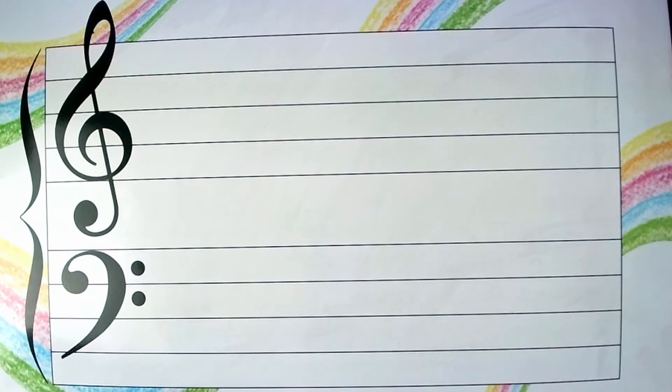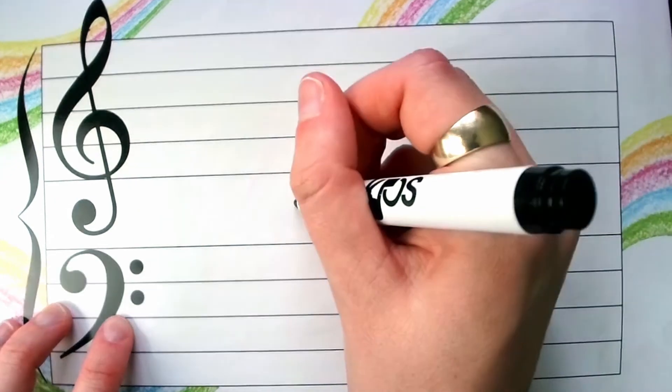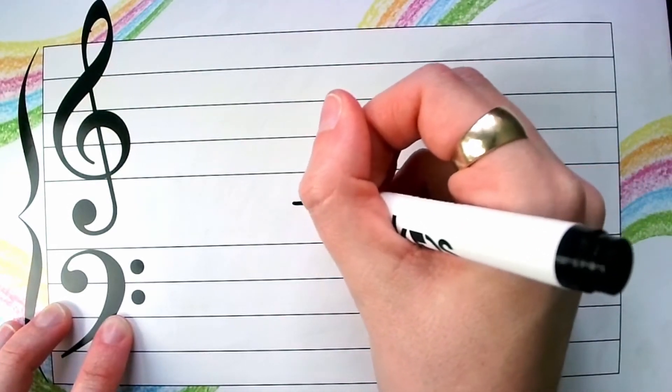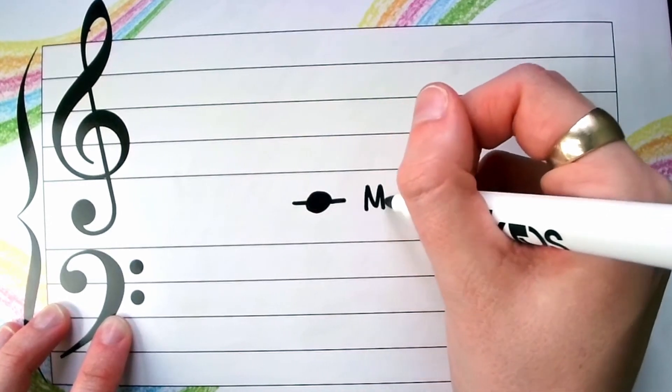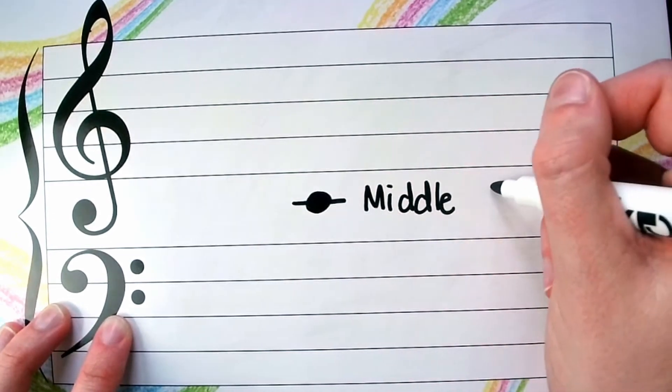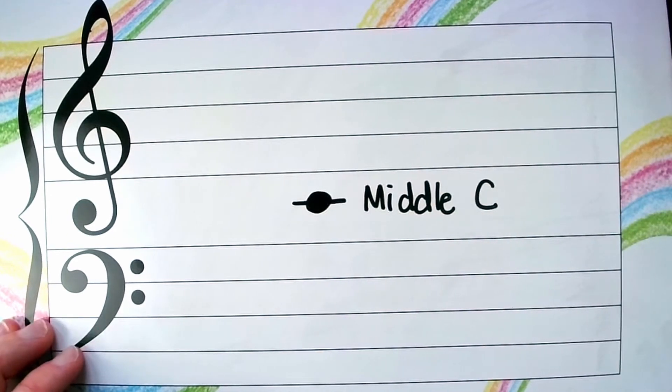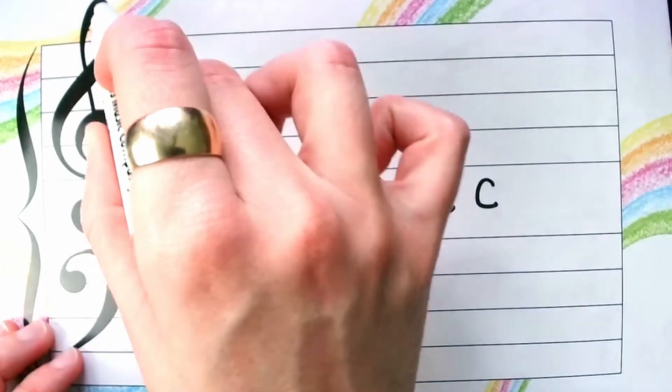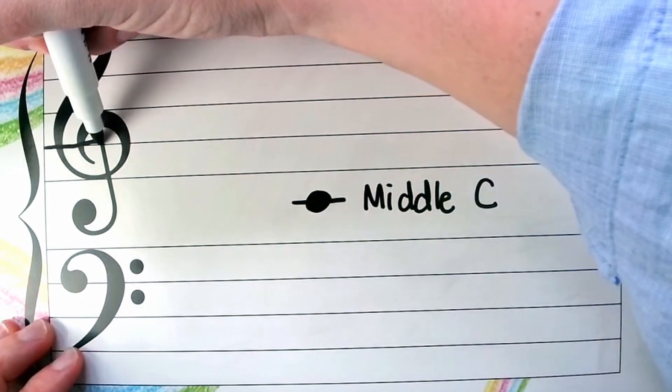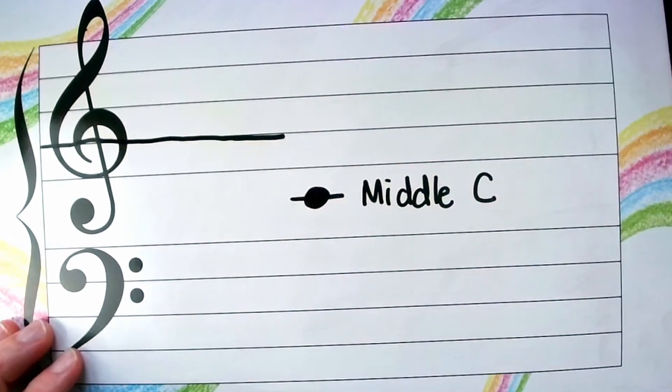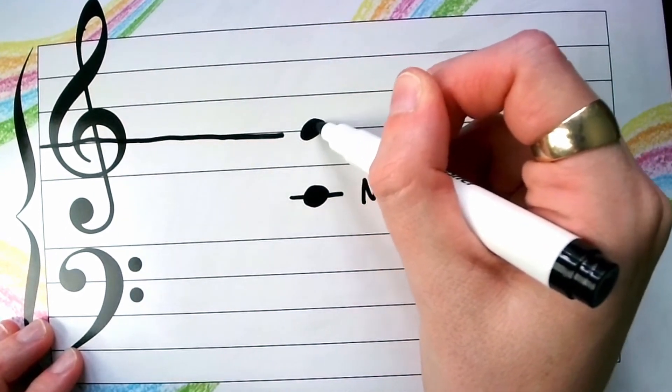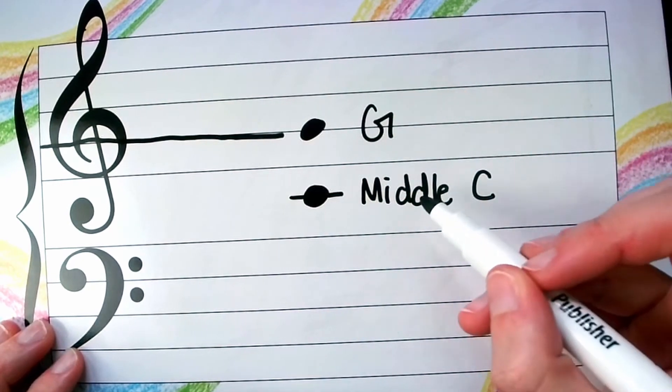We do need to learn a few notes to get started, of course. The first one we're going to learn is middle C. Middle C gets its name both because it's in the middle of the piano and because it's also visually in the middle of the staff. This is middle C. This is our first note to learn. Our second note has to do with our treble clef symbol. So our treble clef symbol here is oriented around this second line. And the note that's on this second line is G. So now we have C and G.